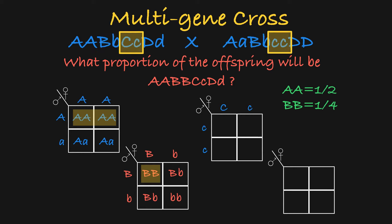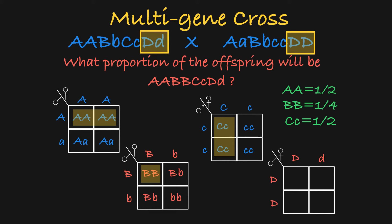And with gene C, we see that these two parent genotypes will have a 50% chance of having offspring with the heterozygous genotype. Finally, we set up the Punnett square for gene D and we see that the parents will have a 50% chance of having heterozygous offspring.